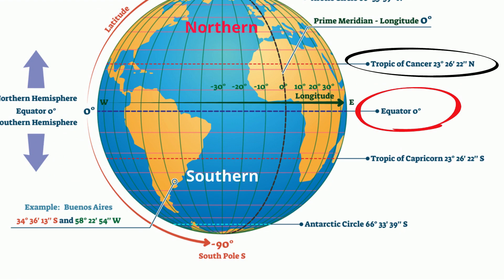The Tropic of Cancer is found at roughly 23.5 degrees north and the Tropic of Capricorn is found at roughly 23.5 degrees south. Between these two measurements, it is called the Tropic.